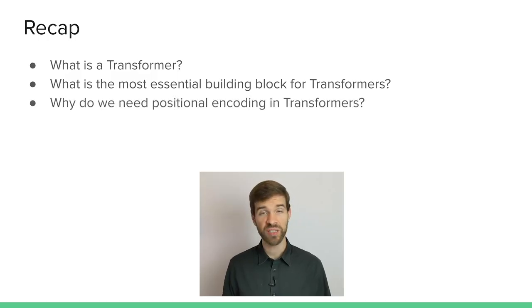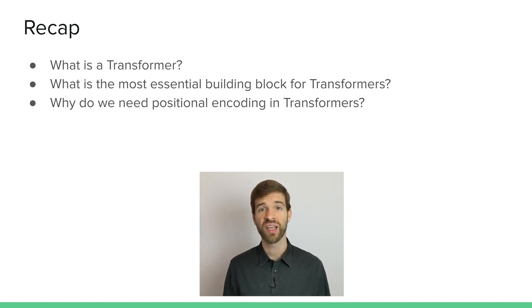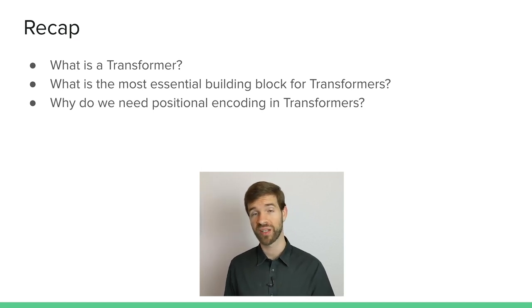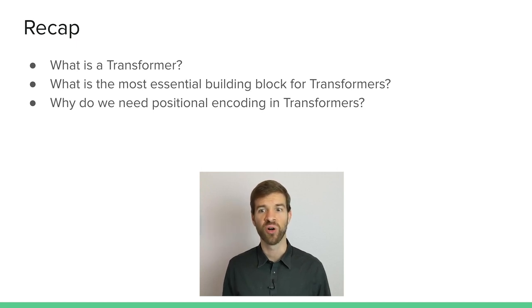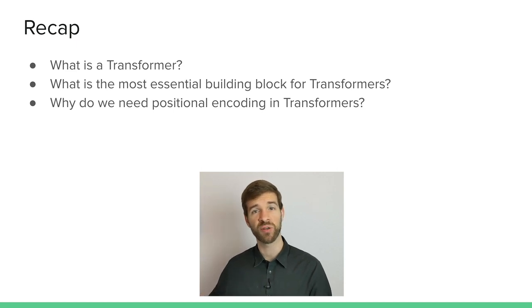If you take the entire sequence in at once, why do we need positional encoding? Especially for natural language processing, we need to encode where a word appears in the input — at the beginning, the end, or somewhere in the middle — because depending on where it appears, the word might mean something differently. The solution is to attach positional information so the network can understand: it's the same word but it appeared somewhere differently.